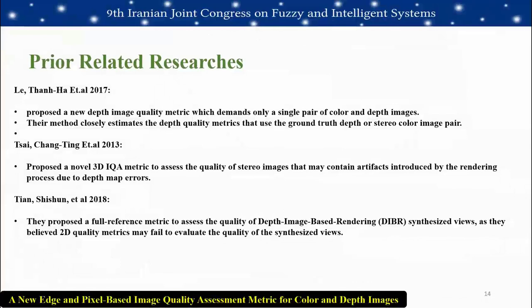Among recent related works: Tan et al. (2017) proposed a depth image quality metric requiring only a single pair of color and depth images, closely estimating depth quality using ground truth depth or stereo color image pairs. Sai Chang et al. (2013) proposed a novel IQA metric to assess the quality of stereo images that may contain artifacts from the rendering process due to depth map errors. Tian et al. (2018) proposed a full reference metric to assess the quality of depth image based rendering or DIBR for synchronized views, noting that quality metrics may fail to evaluate synchronized view quality.